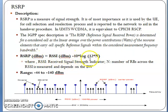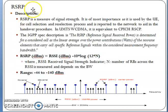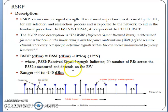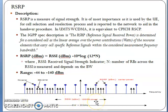The RSRP range varies from −44 to −140 dBm, and its unit is dBm. The formula is RSRP = RSSI − 10 log(12N), where N is the number of resource blocks. The graph shows the RS carriers and data carriers, illustrating RSRP for 20 MHz bandwidth representations across frequency.